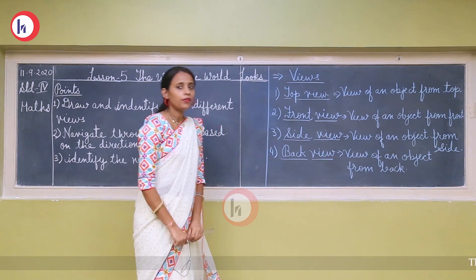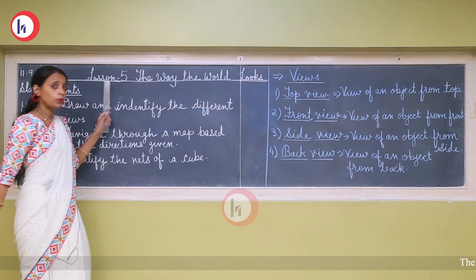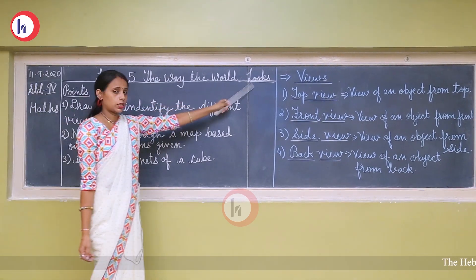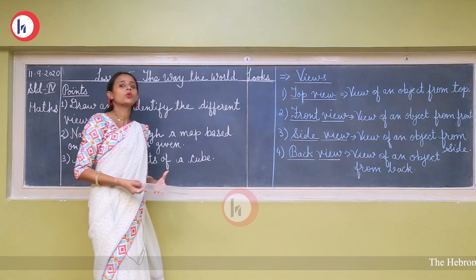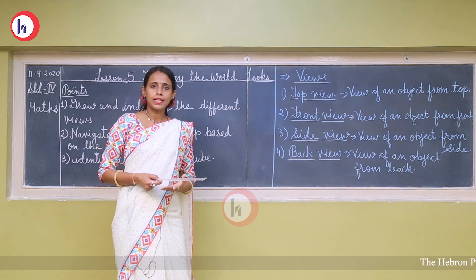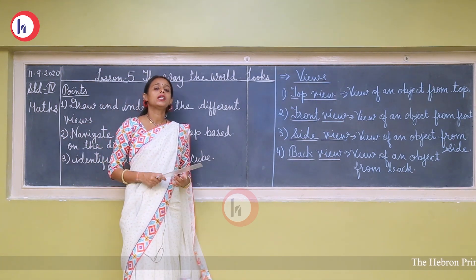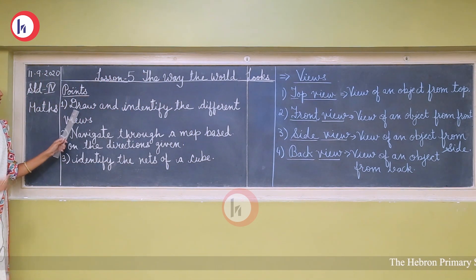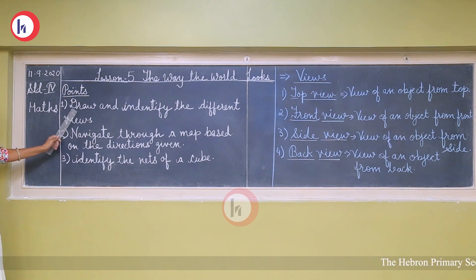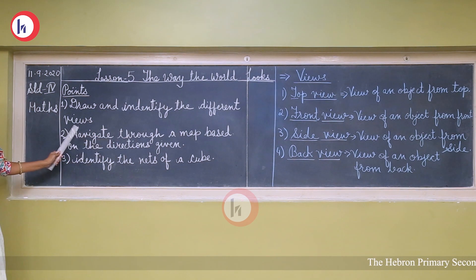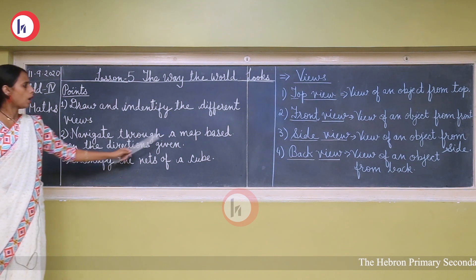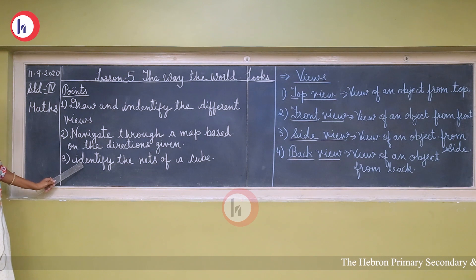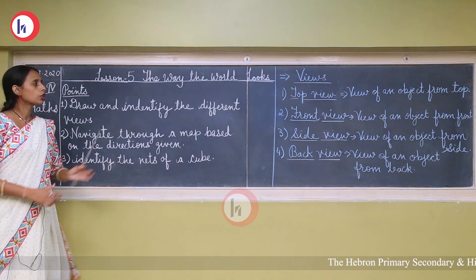Hello students, today we are going to start our new lesson, lesson number 5: The Way the World Looks. This lesson is about how things look differently in size and shapes when we see them from different positions. In this chapter we will understand: first, how to draw and identify different views; second, navigate through a map based on directions given; and third, identify the nets of a cube.